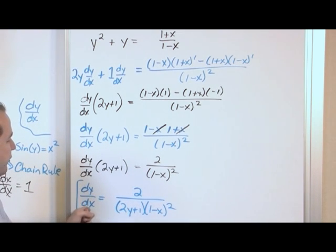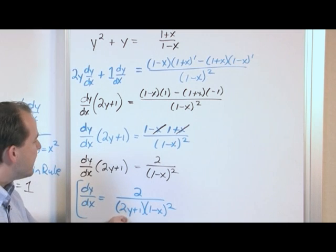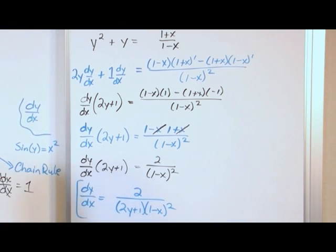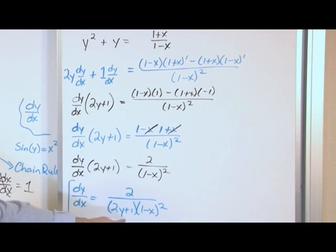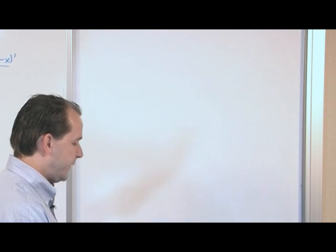So it's very common when you get your implicit differentiation, your implicit derivatives, to have y's and x's running around your answer. And the reason that's the case is because our original function was not explicitly defined. So our derivative is not going to look quite so nice either. That's basically the bottom line on that.